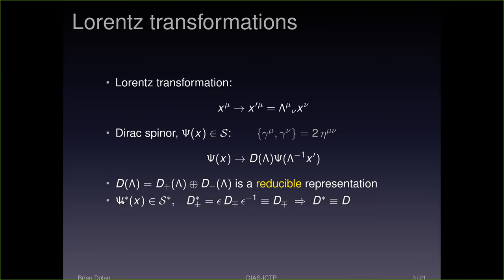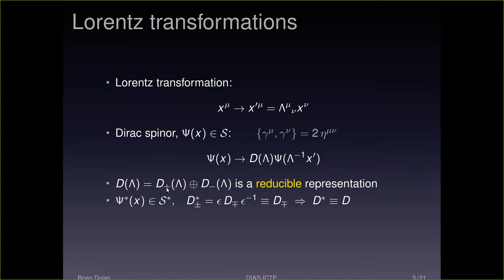What's important for what I'm going to say is that the complex conjugate of the spinor gives a different representation. These are not real representations. The complex conjugate of D-plus is actually equivalent to D-minus, and vice versa — up to a similarity transformation. So if you complex conjugate a D-plus spinor, you get a D-minus, and if you complex conjugate a D-minus, you get a D-plus, up to a similarity transformation.